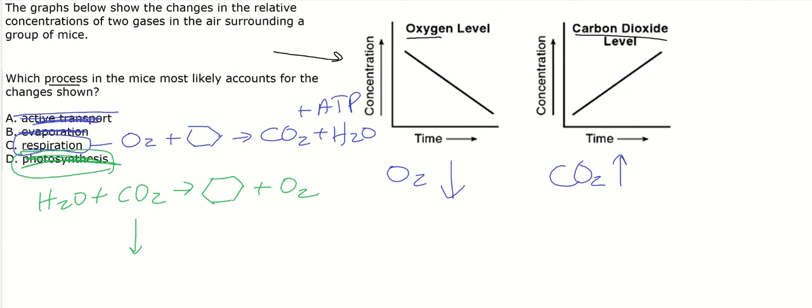The oxygen goes down because mice are breathing in and using it in cellular respiration, and then they're breathing out carbon dioxide. So that's what's going to increase the carbon dioxide level. That's all there is to it.